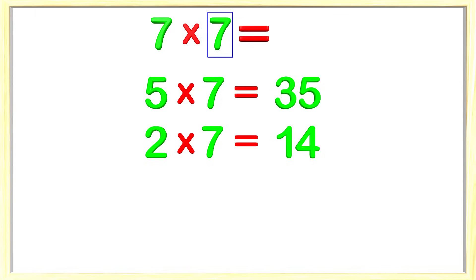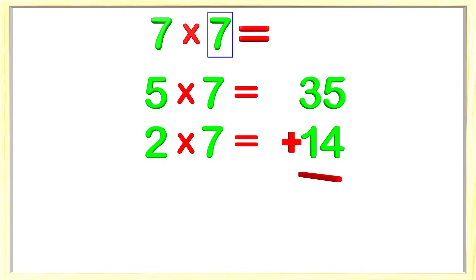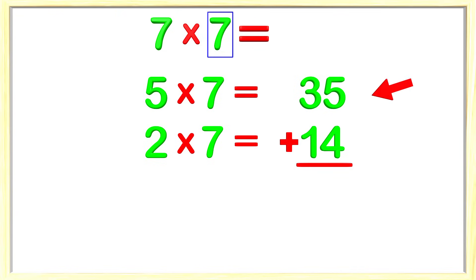Wait, are we done yet? No, we still have to finish the problem. In order to get the answer we need to add the 35 and 14 together. 5 plus 4 is 9 and 3 plus 1 is 4. Wow, 49 is the answer. That is awesome! So 7 times 7 is 49. Even though we did not know our 7 times tables very well, we solved the problem by breaking apart one of the factors into numbers we knew how to multiply. Then we added the 35 and 14 together and got our answer. That is amazing!